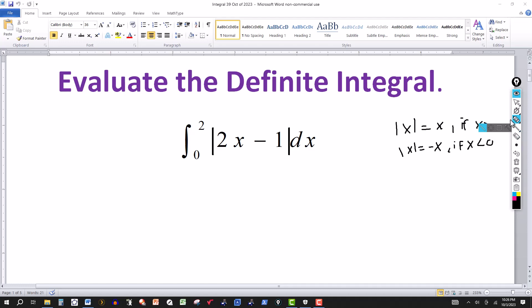So now to deal with this definite integral, I'm going to break this up into two integrals. I have to stay between 0 and 2 because those are the limits of integration. So let's see, 2x minus 1 will be less than 0 if x is less than 1 half. Now 2x minus 1 is greater than or equal to 0 if x is greater than or equal to 1 half.